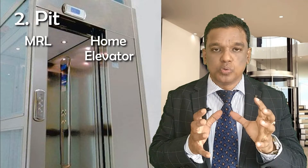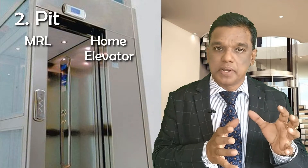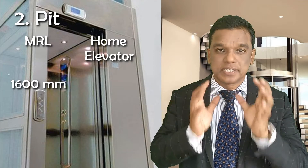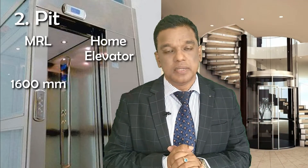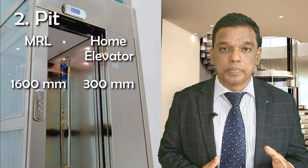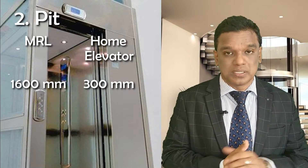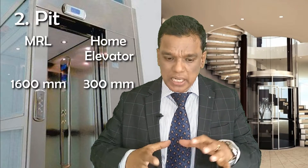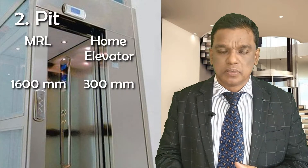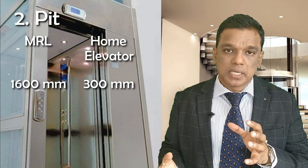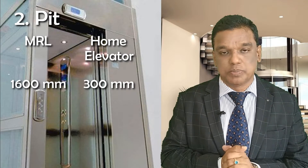Point number two: the pit depth in MRL — machine room less elevator — is 1600 mm, which is 1.6 meters. At the same time, in a home elevator the pit required is only 300 mm. The advantage of a home elevator is that where you cannot build a 1.6 meter pit, you only need to provide 300 mm. Even if there is no pit, you can raise the floor by 300 mm — about one foot. So the pit depth required is much less in a home elevator compared to 1.6 meters in MRL.